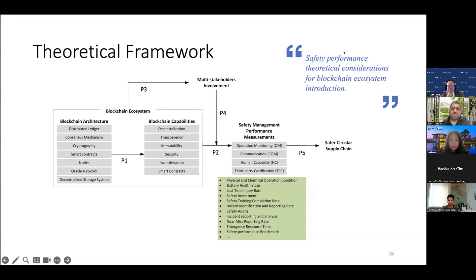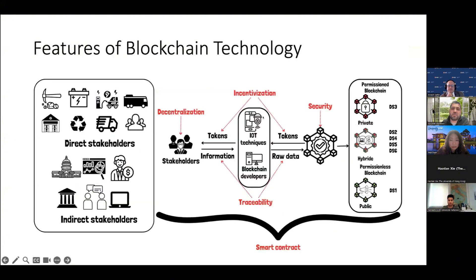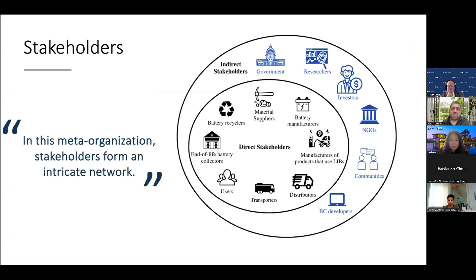With this safety measurement approach, we are currently working on additional research questions: how do we integrate blockchain to mitigate safety issues, what is the role of stakeholders in blockchain technology to mitigate safety issues, and what are the potential gaps from the stakeholder perspective? We use the RACI matrix to define responsible, accountable, consulted, and informed stakeholders, and from that we define direct and indirect stakeholders in the blockchain framework.